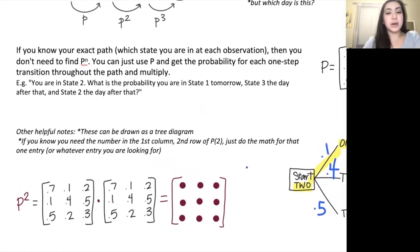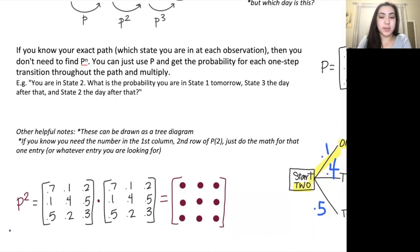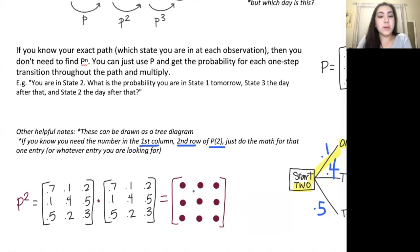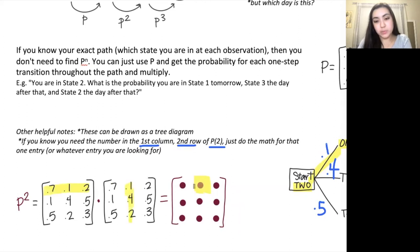You can minimize work when computing a power of P by only calculating the specific entry you need. For example, if you want the value in row two, column one of P^2, just multiply row two of P by column one of P using standard matrix multiplication. You can stop there and use that single value as your answer without computing the entire matrix.